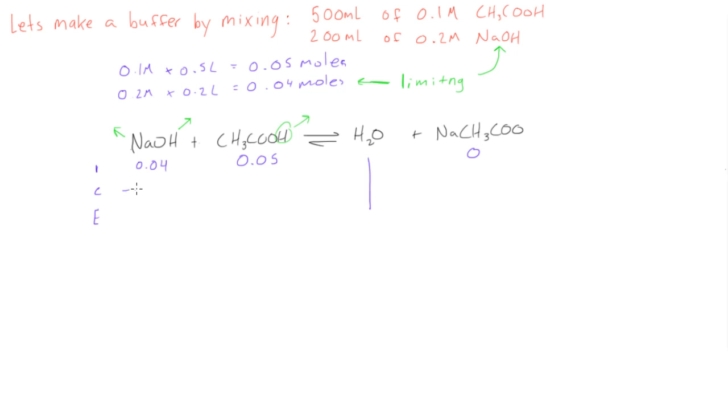So we know that our change, we can get rid of 0.04 moles here. We can get rid of 0.04 moles here and we can add 0.04 moles here. And this will give us 0 at the end for equilibrium. This will be 0.01 moles. And this will be 0.04 moles.